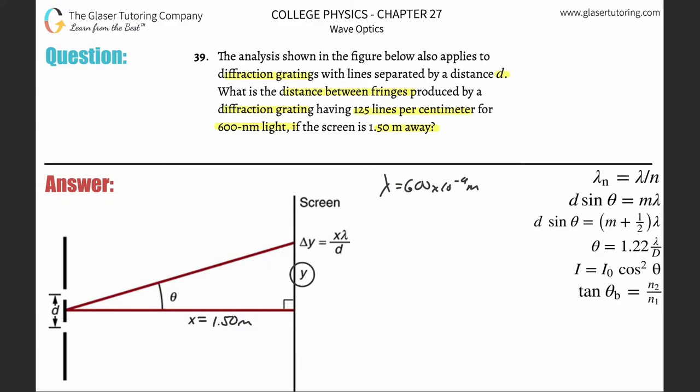So it also tells us the number of lines per centimeter, but you know by now that does not represent the distance between the lines. It just tells us lines per distance. So we have to take the reciprocal of that. In other words, there's one centimeter for every 125 lines. Now this would give us the distance per line.